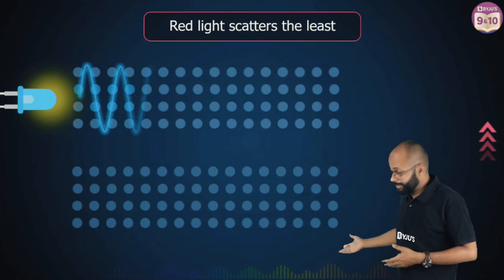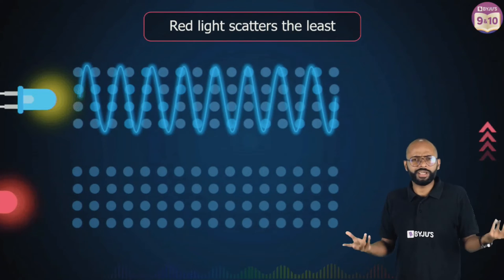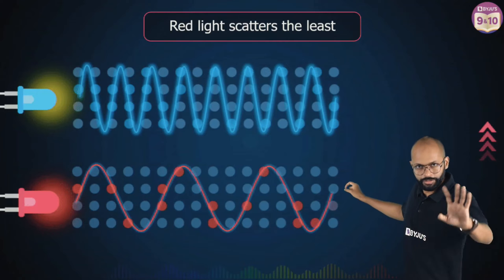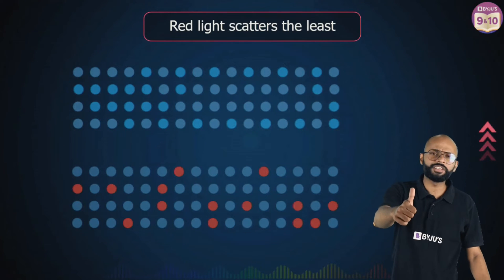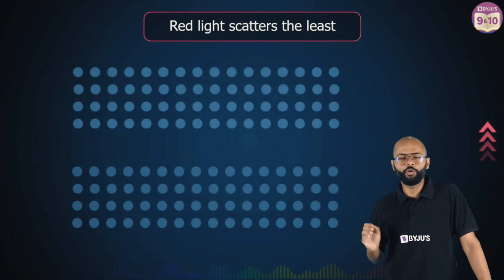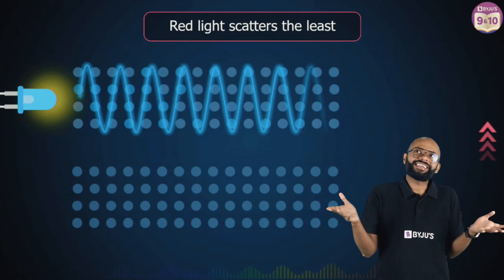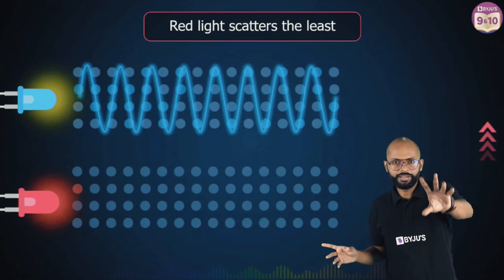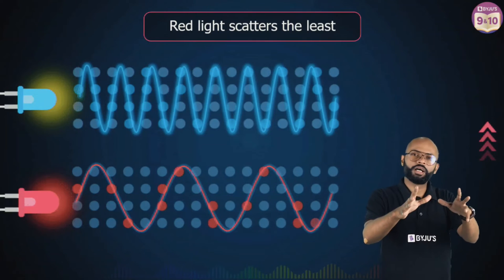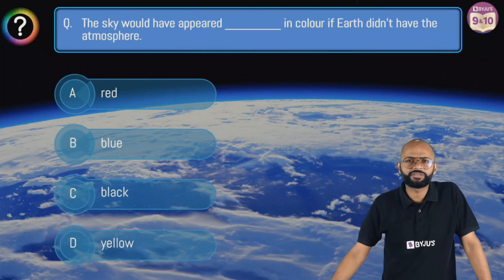Longer wavelengths like red interact with fewer particles, so red scatters relatively less. Whatever gets scattered becomes the color of the sky; whatever remains becomes the color of the sun. So shorter wavelengths scatter more, longer wavelengths scatter less. Violet and blue scatter more; red scatters less and passes through.